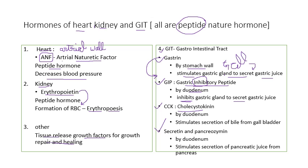The next hormone is cholecystokinin (CCK) — 'chole' means bile, 'cyst' refers to the cystic duct of the gallbladder, and 'kinine' means contraction. It is released by the duodenum and stimulates secretion of bile from the gallbladder. The next hormones are secretin and pancreosymin, which stimulate the secretion of pancreatic juice from the pancreas, released by the duodenum. This concludes today's lecture on gonads and hormones of the heart, kidney, and GIT. In the next lecture we will talk about the mechanism of hormone action.